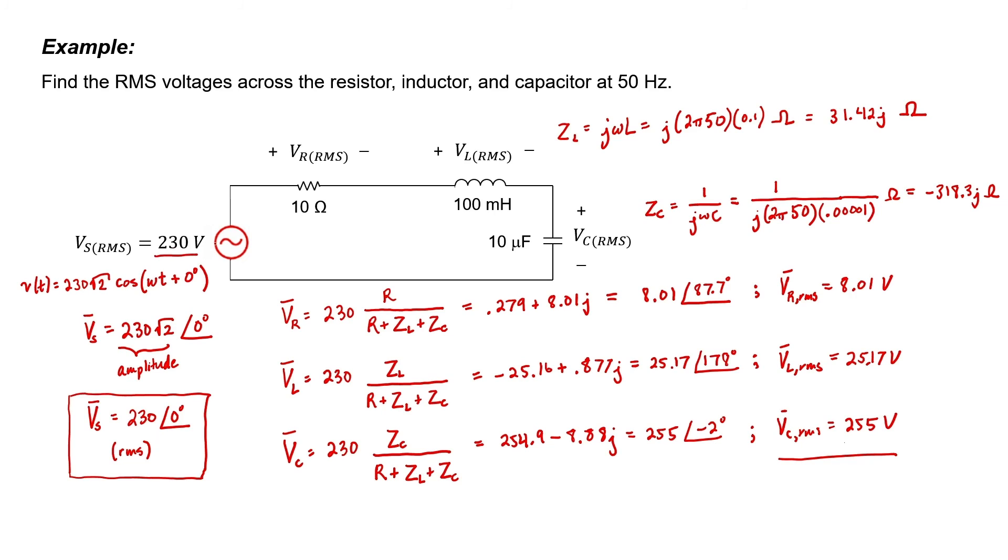The second interesting thing that I'd like to point out is that the capacitor voltage is 255 volts, and the source voltage is only 230 volts. We ended up with a voltage inside the circuit that's higher than our source voltage. That's a bit strange, but it can happen sometimes when you have capacitors and inductors in AC circuits, so it's something that you'd want to be aware of.